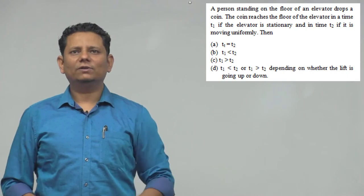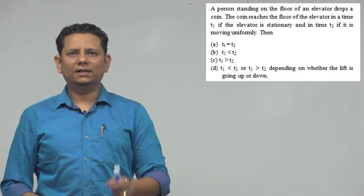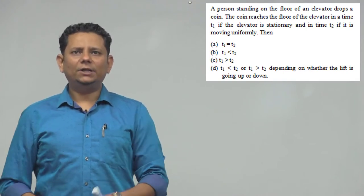Next question. The question says a person standing on the floor of an elevator drops a coin. The coin reaches the floor of the elevator in time T1 if the elevator is stationary and in time T2 if it is uniformly moving.